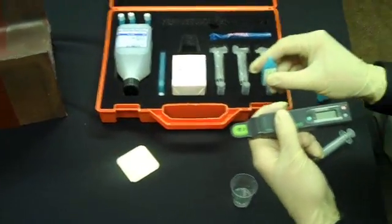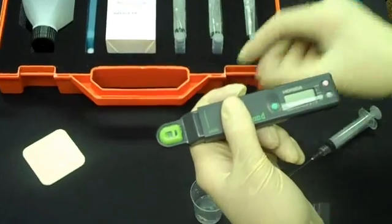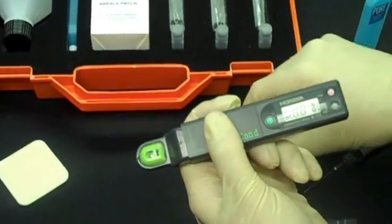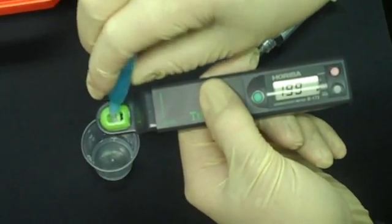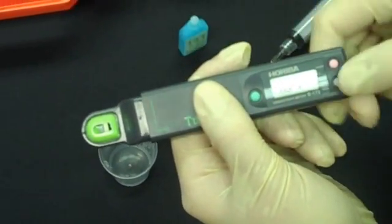To do so, the kit has a calibration solution. Just turn the gauge on, insert a few drops of the solution into the sensor area, and press CAL.